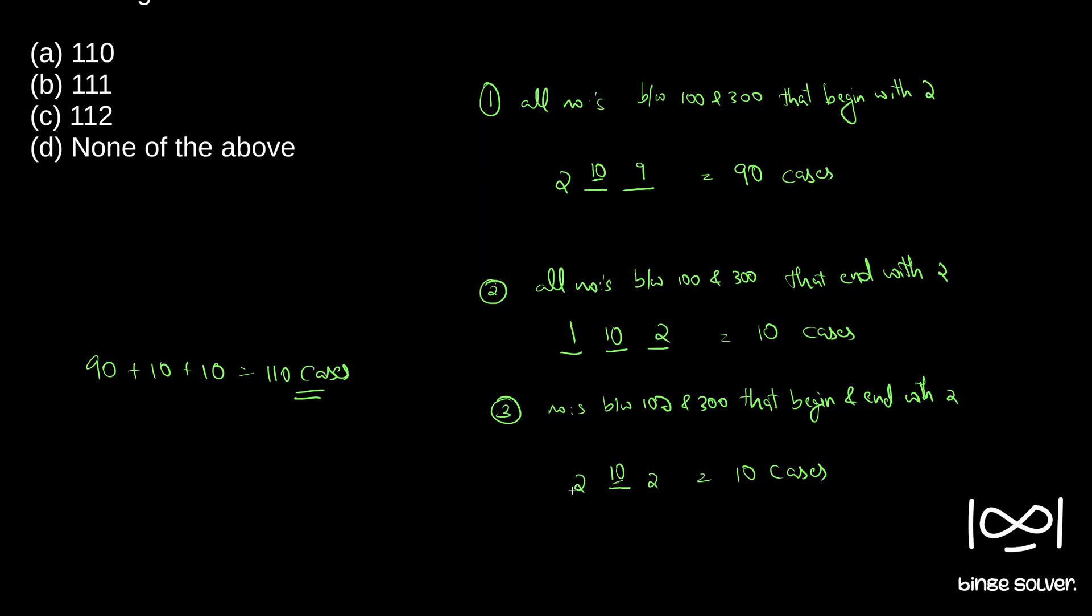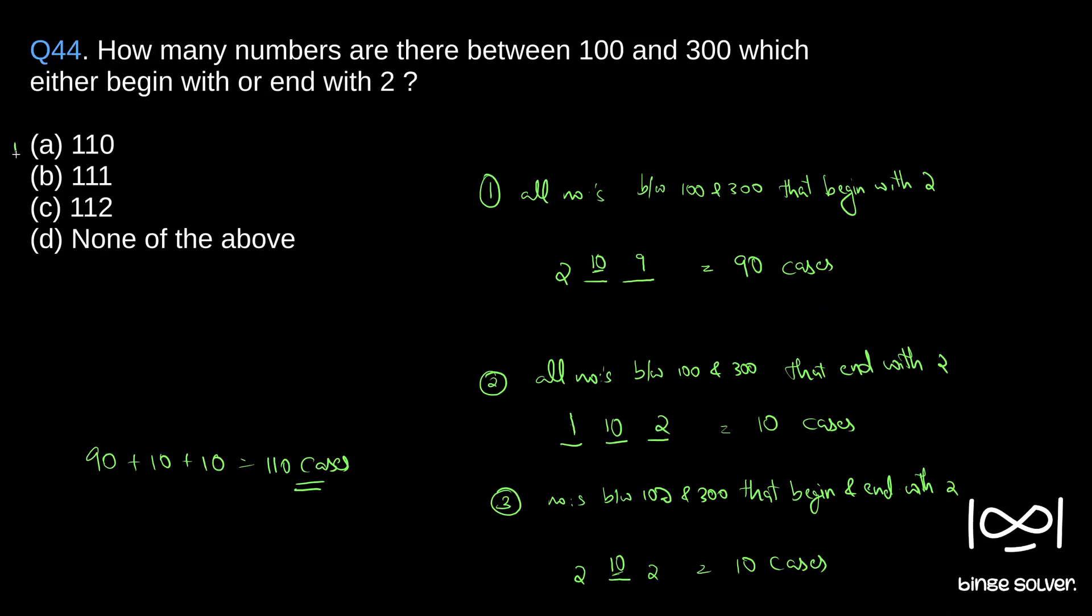what we did was avoid all the duplicates. So since we took only digits that start with 2 and avoided numbers that end with 2, there will not be any duplicates between these two cases. Similarly, we also avoided, from when we took these two cases, we also skipped the numbers that are starting and ending with 2. So we made it into a separate case and added that too. So totally 90 plus 10 plus 10 equals 110 cases. So our answer will be A, 110. The solution to Question 44 is A, 110.